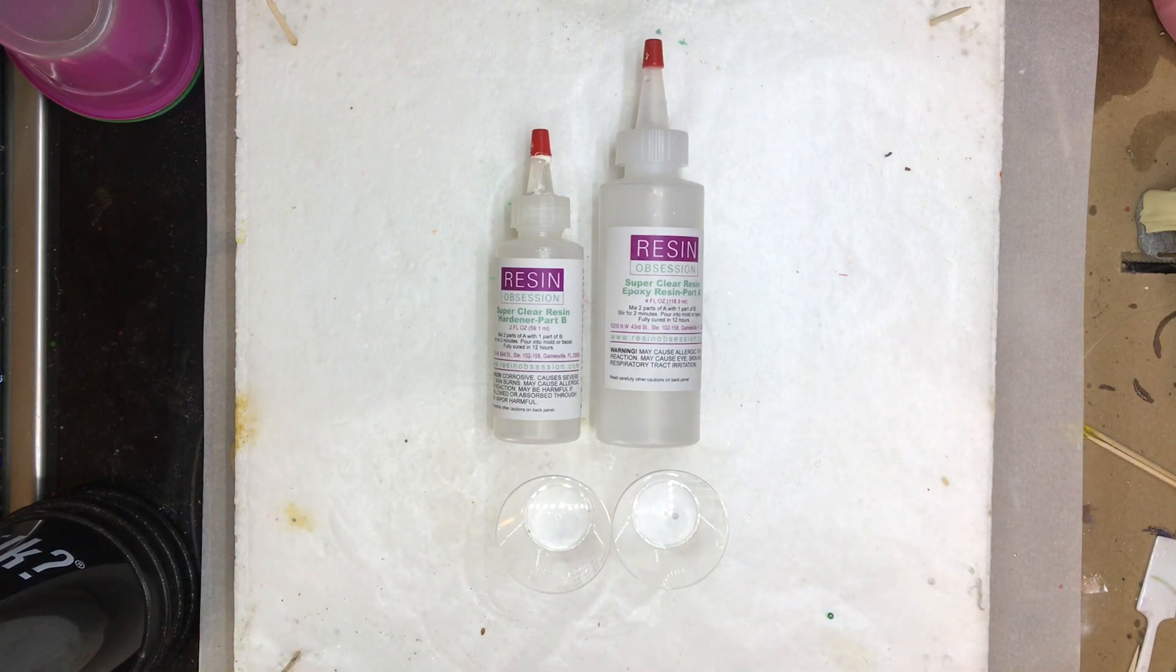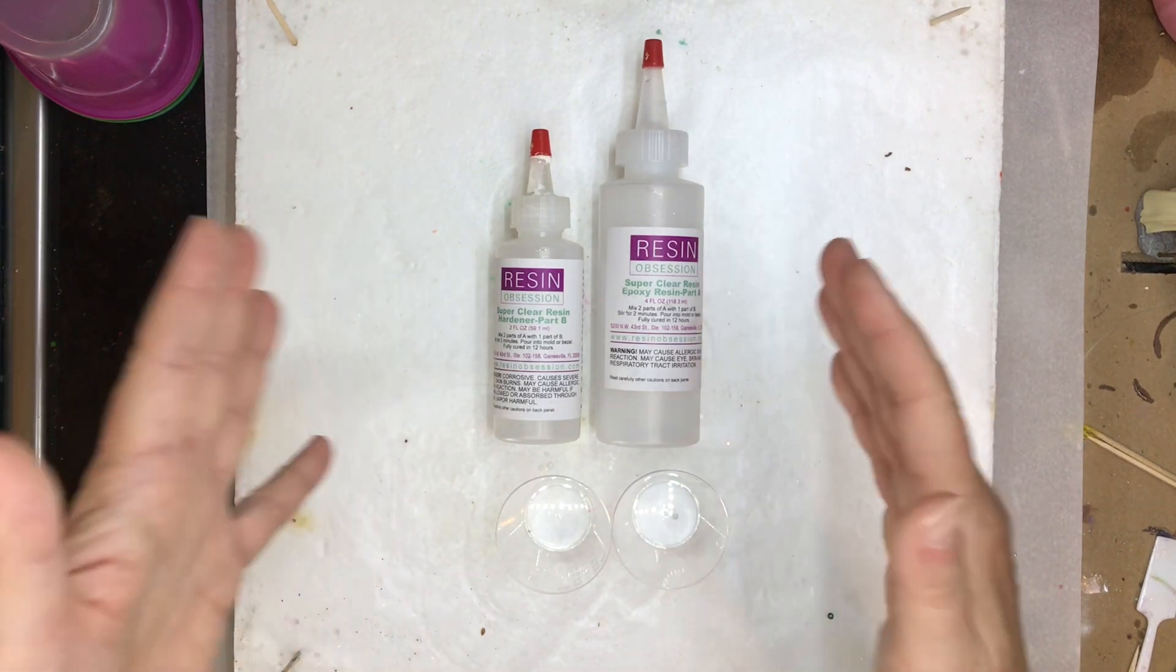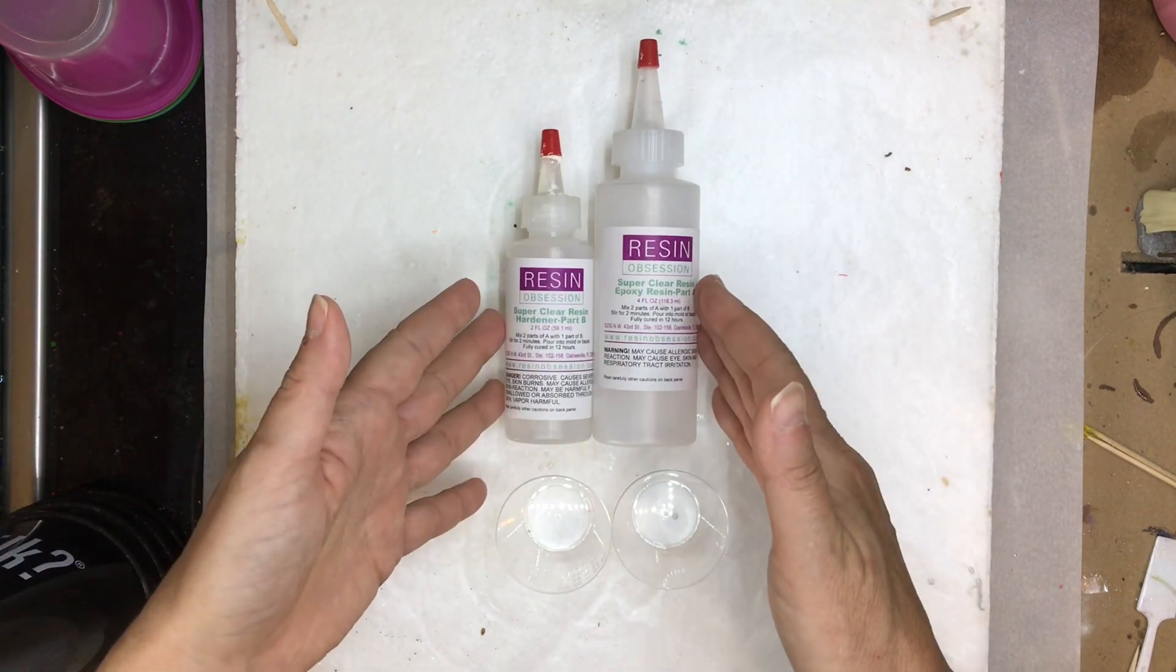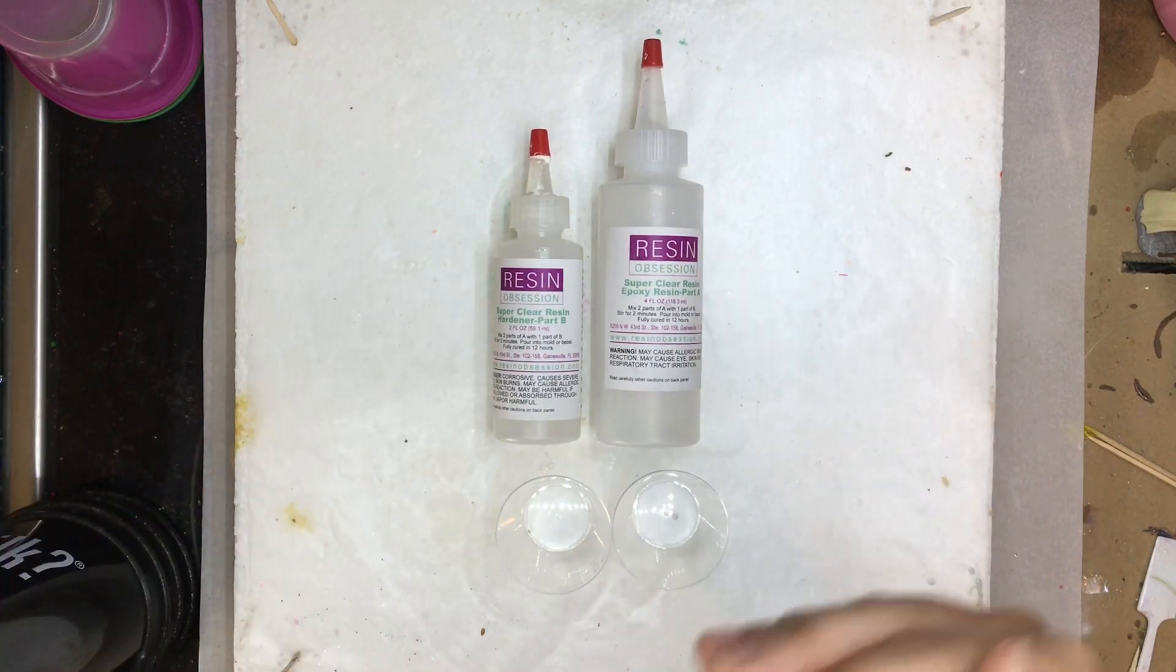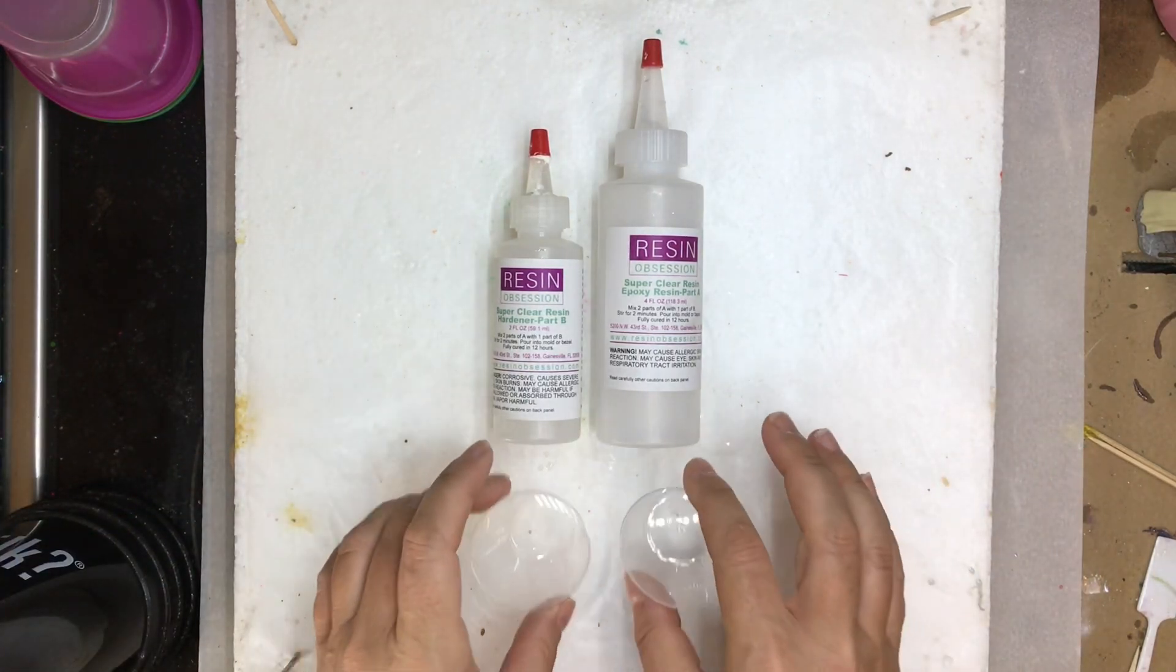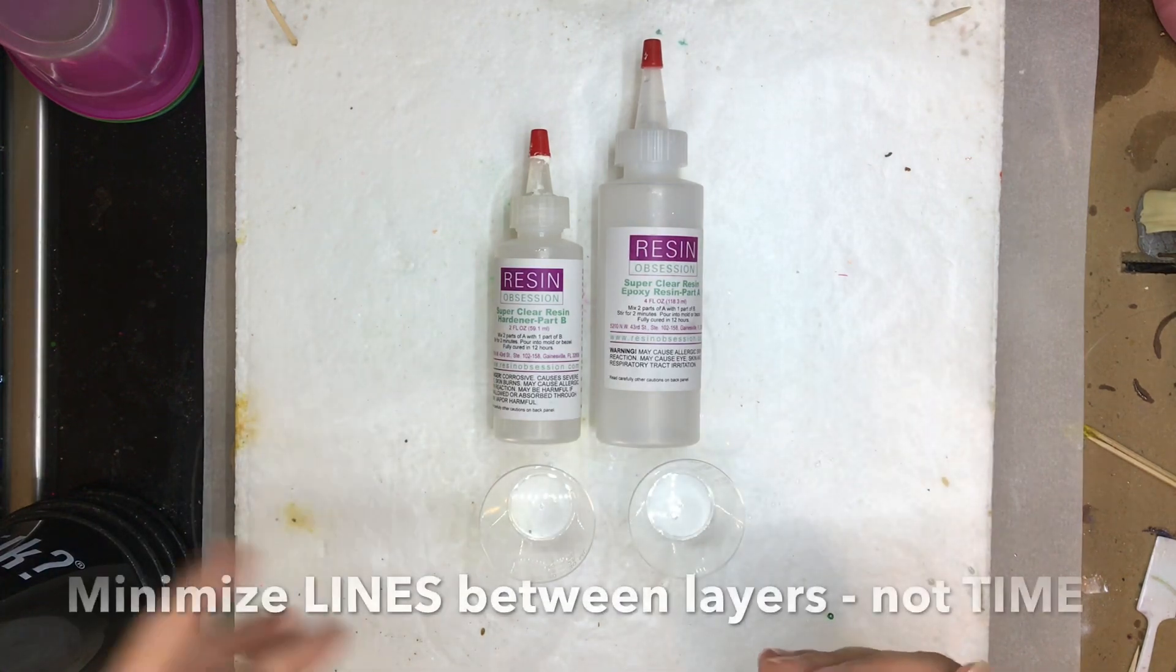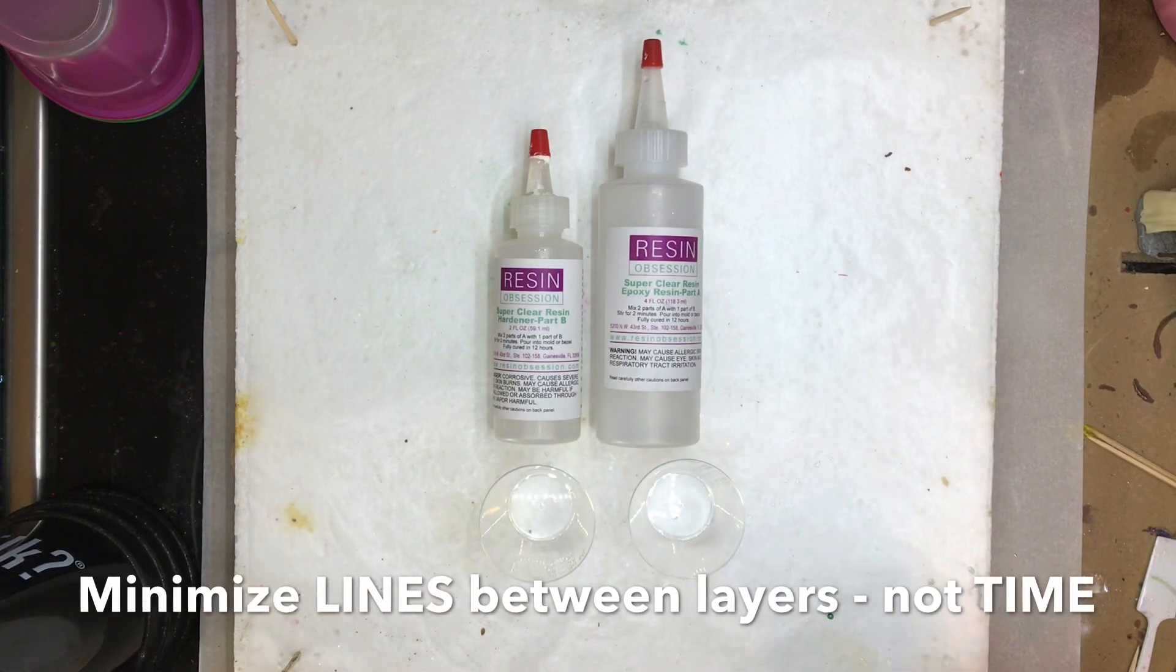The reason you need to know a resin's gel time is for situations when you're adding layers to your resin project. While you can let your resin completely cure and then add another layer on top, you're going to see a line between layers. What's nice about knowing a resin's gel time is if you apply the next layer when the previous layer is in that gel phase, you're going to minimize that line between layers.